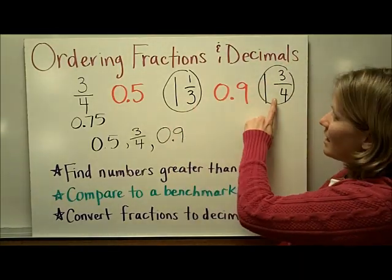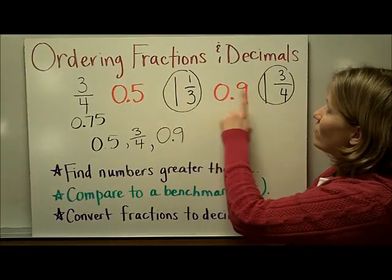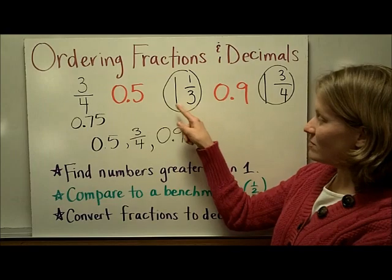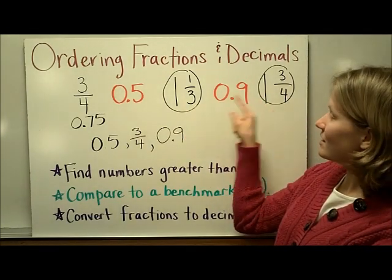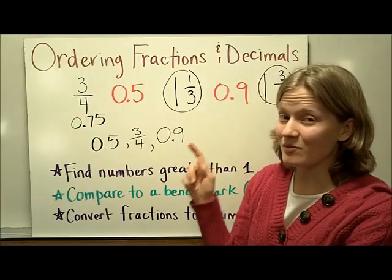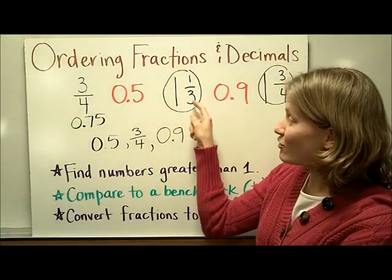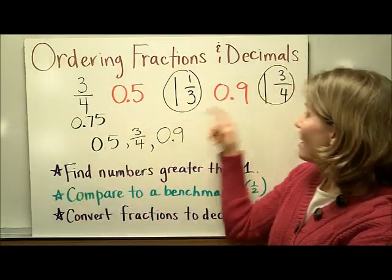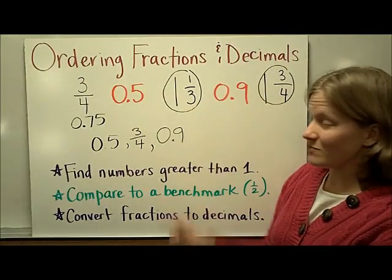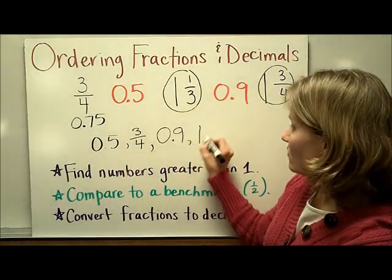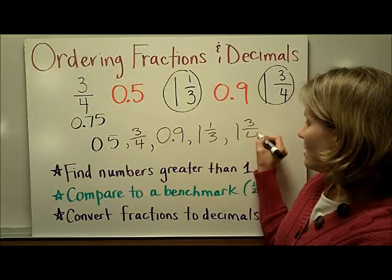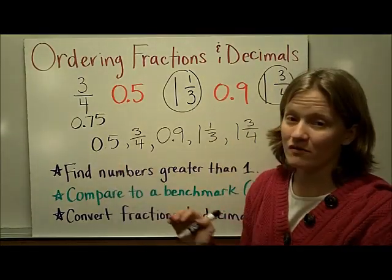Now I have to go back and compare 1 and 1 third and 1 and 3 fourths. Since the whole number is the same, I'm just going to compare the fraction piece. Comparing to the benchmark one half, 1 third is less than a half and 3 fourths is more than a half, so 1 and 1 third is going to be smaller. So I'll write 1 and 1 third followed by 1 and 3 fourths. These are now listed in order from least to greatest.